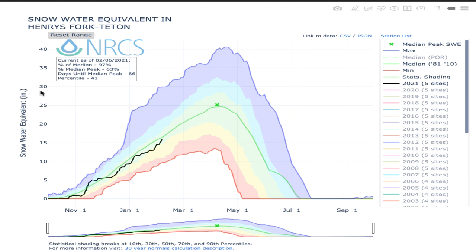The snow is not evenly distributed in the Henry's Fork basin — there's much more high up in the mountains on the western flank of the Tetons and very little near the confluence with the Snake River. But if you took all that snow, spread it uniformly across the basin, and reduced it to a single depth, you'd get the basin-wide snow water equivalent. Multiplying that by the watershed area gives you the volume of snow water stored in the watershed. The y-axis goes from zero to about 40 inches.